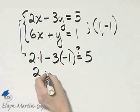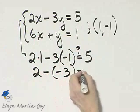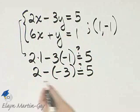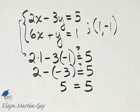Well, 2 times 1 is 2, minus 3 times negative 1, that's negative 3, is that 5? 2 minus a negative 3, that's 5. 5 does equal 5.